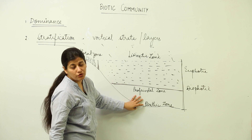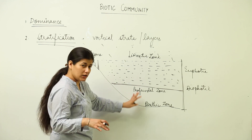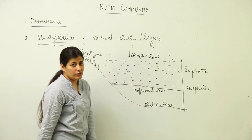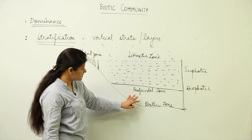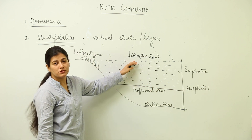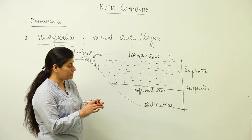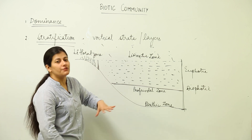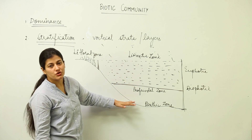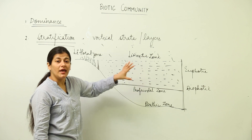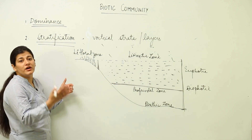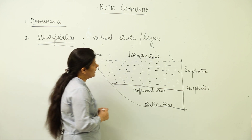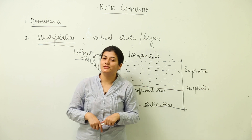The euphotic region has light availability much beyond the compensation point, so productivity is high there, while productivity is less in the dysphotic zone. In the profundal zone there are no producers, but animals are present. At the benthic zone also you find animals which are devoid of colors — usually black or gray — as it is a completely dark region. This stratification in pond or lake ecosystems enables the survival of more organisms because there are layers present. This concludes our discussion on stratification and dominance.